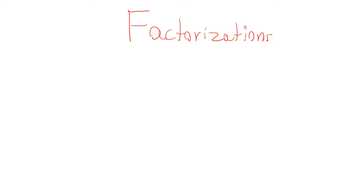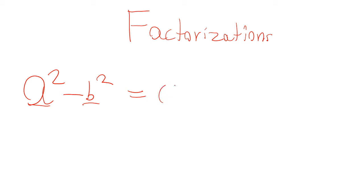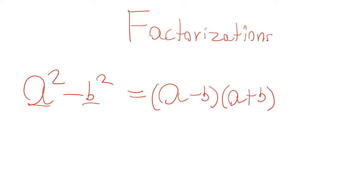So, factorizations — you're going to need to know the difference of squares factorization. If we have a squared minus b squared, for any constants a and b, this can be factored as a minus b times a plus b. It can be factored into a product of binomials.